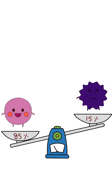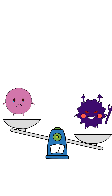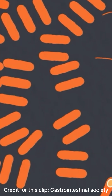Normally, good bacteria are greater in number in our gut, which utilizes the nutrients required for bacteria to grow and keeps the bad bacteria in check. Antibiotics can disrupt the balance of gut microbiota by killing off good bacteria.